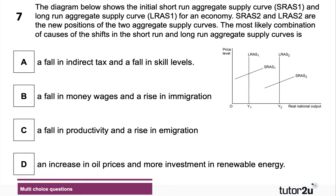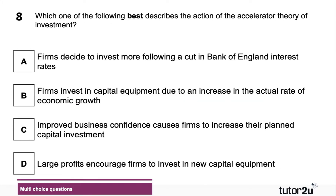Question seven: the diagram shows the initial short-run and long-run aggregate supply curves; SRAS2 and LRAS2 are the new positions. What is the most likely combination of causes of the shifts? There has been an outward shift in both short-run and long-run aggregate supply. The answer is B — a fall in money wages causes a fall in wage costs of production, shifting the short-run aggregate supply curve out, and a rise in immigration increases the active labour supply and increases productive potential.